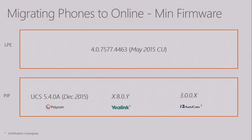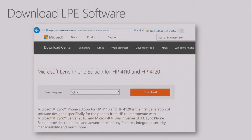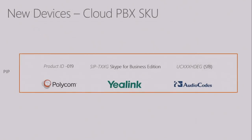If you're migrating phones from on-prem to online, you want to make sure they have the minimum firmware required to work for online. For Lync Phone Edition, the minimum firmware required was released in May 2015. For the Partner IP Phone Program, each partner has a specific release number that's the minimum firmware needed to connect to online. To download the latest firmware for Lync Phone Edition, do that before you migrate the user or phone to online — go to the Download Center and download the latest firmware if you don't have it.